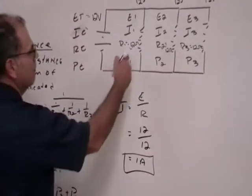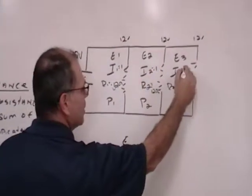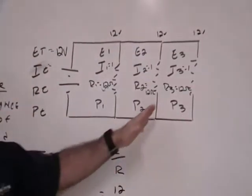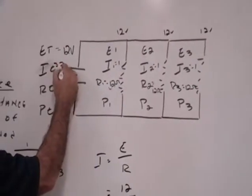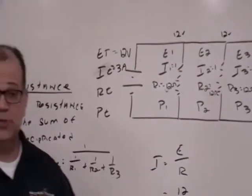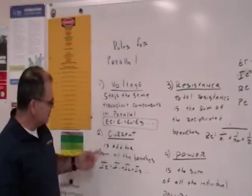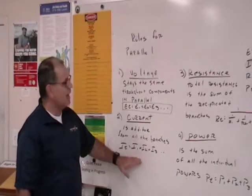So this would be 1 amp, this would be 1 amp, and this would be 1 amp. The rule says that it is additive, 1 plus 1 plus 1, my total current would be 3 amps. That's the second rule. The second rule for current is that the individual currents are going to be additive.